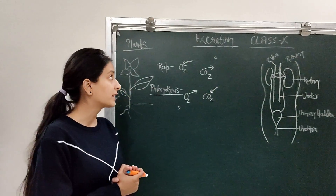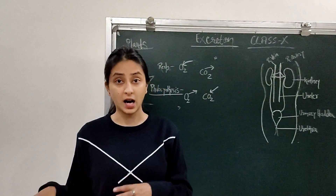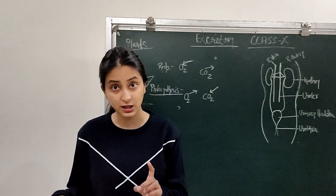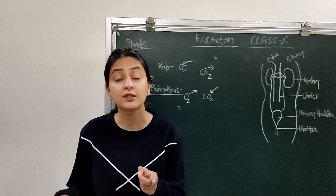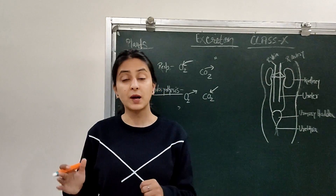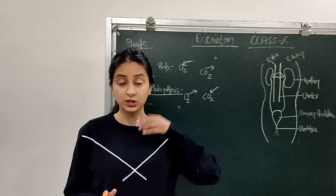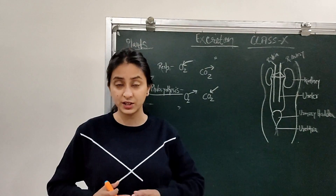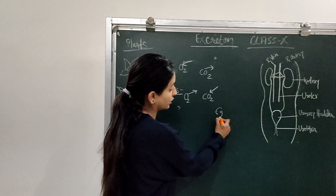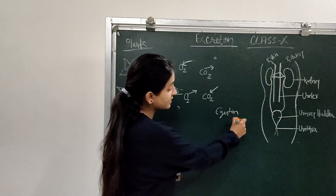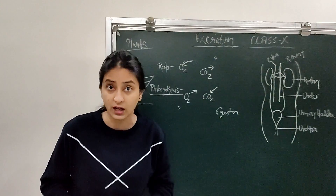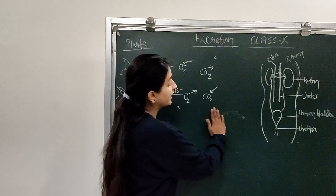First of all, solid waste that comes out of the body — meaning potty — is not excretion. Potty comes under defecation, and defecation is part of the digestion process. The steps of digestion are: ingestion of food, breakdown, absorption, and then release of waste from the body, which we call ejection. So potty is called ejection, not excretion. Excretion refers to the release of urine from the body.